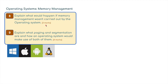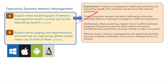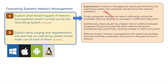For three marks: explain what would happen if memory management wasn't carried out by the operating system. If memory management wasn't performed by the operating system, the computer would encounter several problems. Firstly, programs wouldn't be able to efficiently utilize the available memory, leading to wastage or inefficient allocation. Additionally, there would be a higher risk of conflicts between programs trying to access the same memory location simultaneously, potentially causing crashes or data corruption. Without proper memory management, the system would become unstable and prone to frequent errors or failures.